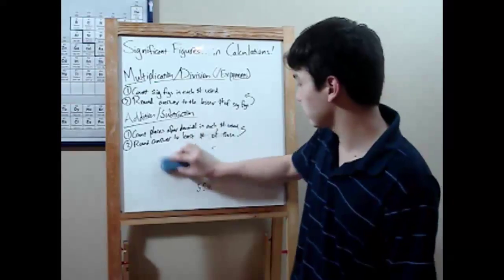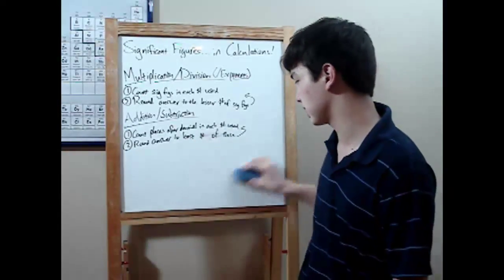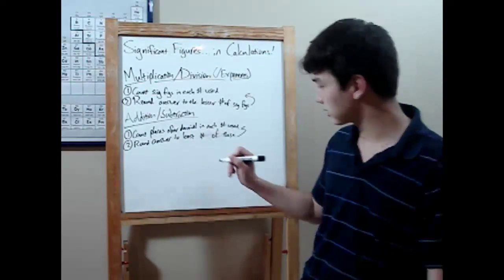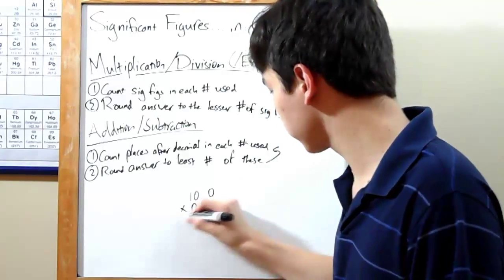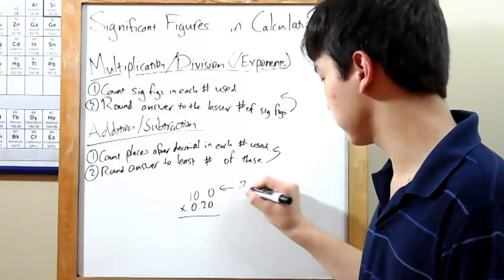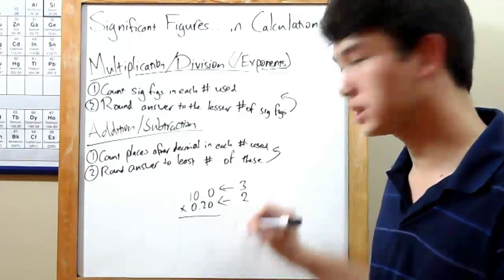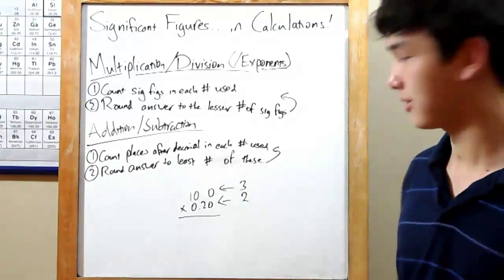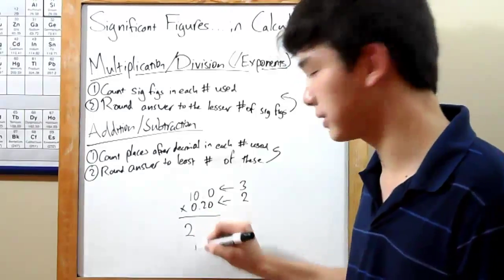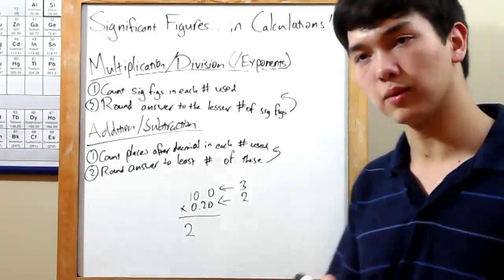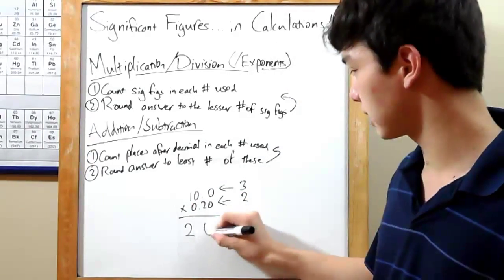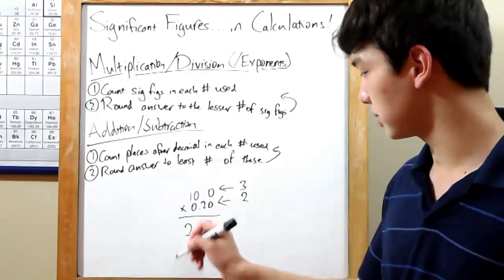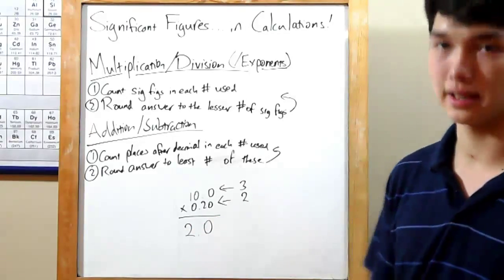One last odd instance that could happen when you're doing multiplication and division. Let's say you've got 10.0 times 0.20. 10.0 has three significant figures, 0.20 has two. So you want your answer to have two significant figures. But multiplying through will give you a two. That's only one significant figure. If you don't have enough significant figures in your answer, you can add them on by putting on an extra zero. 2.0. That's two significant figures, and you're good.